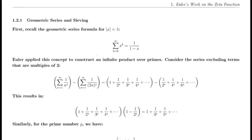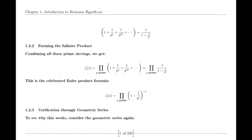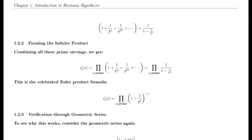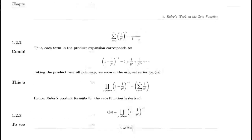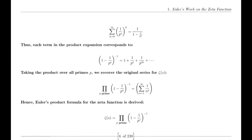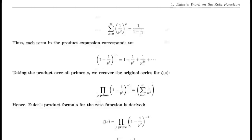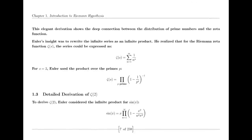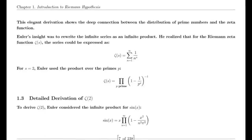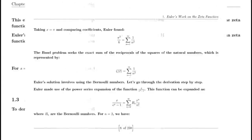Riemann also made use of the Jacobi theta function, which has significant applications in various areas of mathematics. The theta function's series representation and modular properties were instrumental in Riemann's derivation of the functional equation for the zeta function. This equation is crucial for understanding the zeta function's behavior across the complex plane and highlights its intricate connections to other mathematical functions.